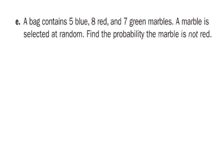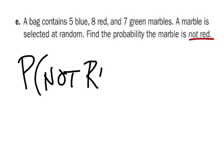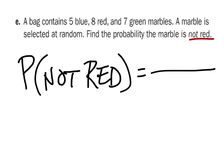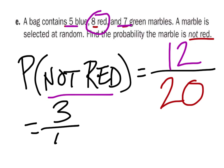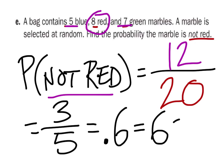Let's look at this example — it's looking for not red. We want the probability of not drawing red. First, how many marbles are in the bag? There are five, eight, and seven — that gives us 20 total marbles. How many are not red? Eight of them are red, so five and seven gives you 12 marbles that are not red. Simplified, that's three-fifths, which as a decimal is 0.6, and as a percent is 60%.